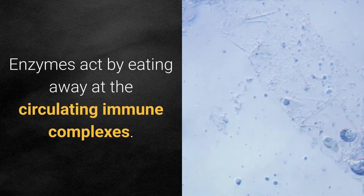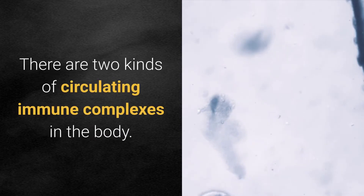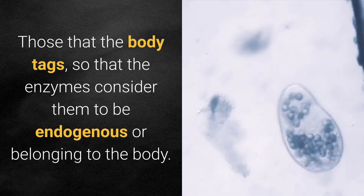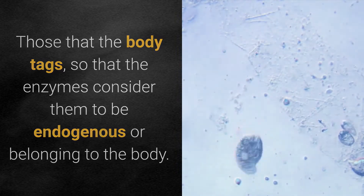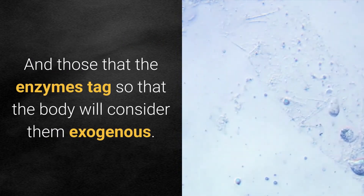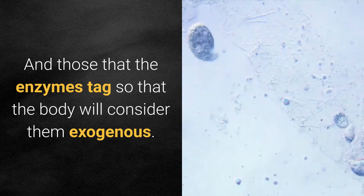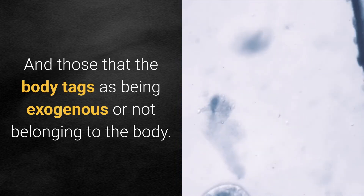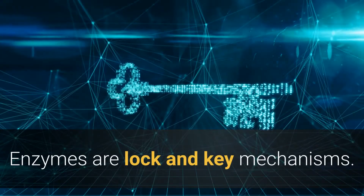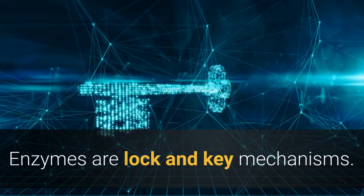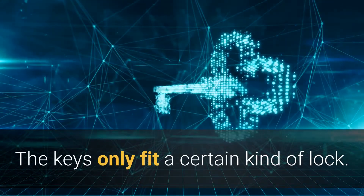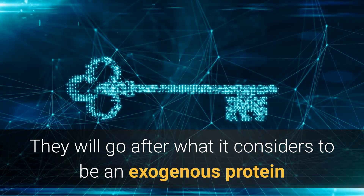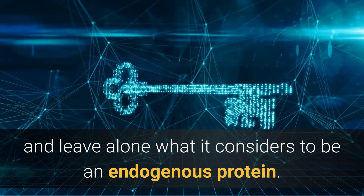Enzymes act by eating away at the circulating immune complexes. There are two kinds of CICs in the body: those that the body tags as endogenous — belonging to the body — and those that the body tags as exogenous — not belonging to the body, like a piece of steak floating in your bloodstream. Enzymes are lock-and-key mechanisms; they will go after what they consider to be an exogenous protein and leave alone what they consider to be an endogenous protein.